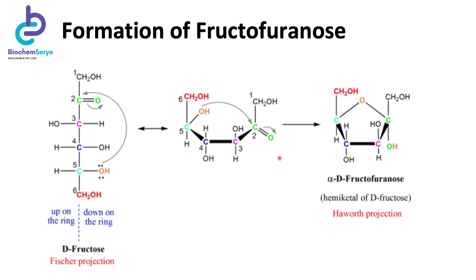Sugars in a furanose conformation are known as furanoses, and this particular product is called fructofuranose. The same convention applies: groups located on the left side of the backbone in the Fischer projection are oriented above the plane of the ring in the Haworth projection. The hydroxyl group attached to carbon 3, located on the left in the Fischer projection, is oriented upward in the Haworth projection. This is considered the alpha anomer since the anomeric hydroxyl group at carbon 2 is located on the opposite side from the CH2OH group of C6.